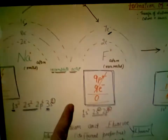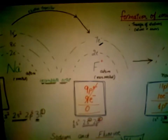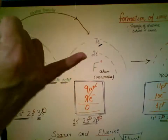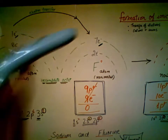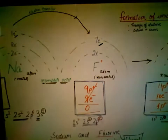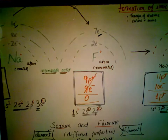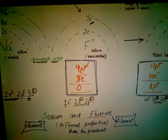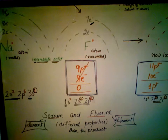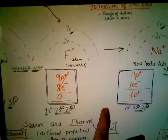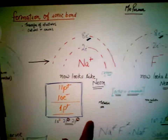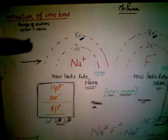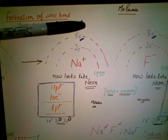For fluorine, the configuration is 1s2 2s2 2p5. The first shell has 2 electrons, and the second shell — at principal energy level 2 — has 5 plus 2, which equals 7 valence electrons. Both sodium and fluorine atoms are neutral, and their properties are entirely different from the properties of the compound they form after they react. This arrow means we are now reacting them.